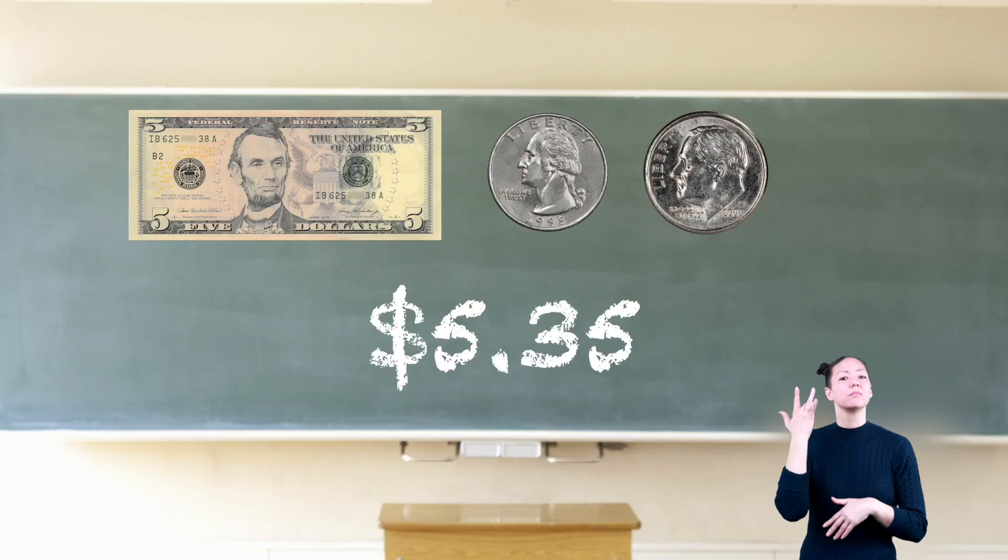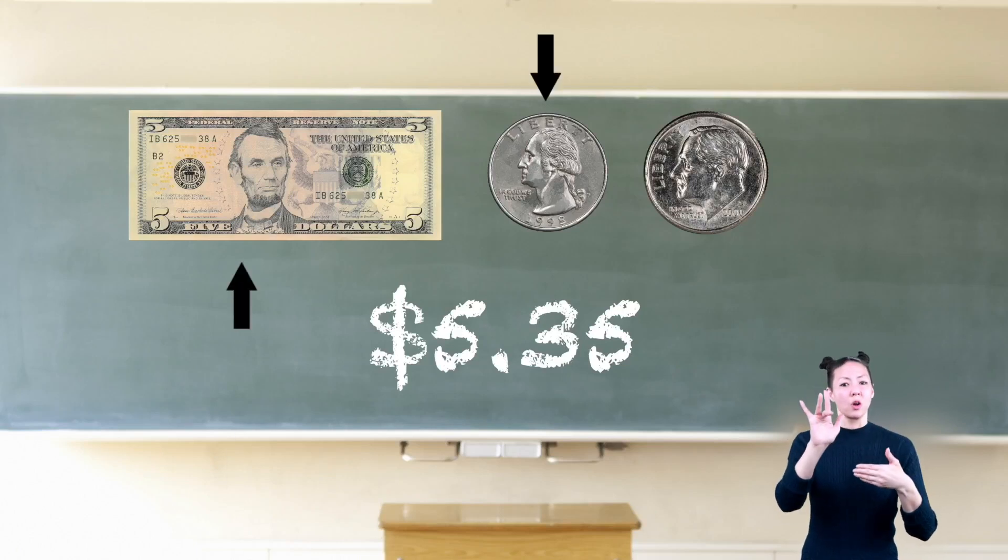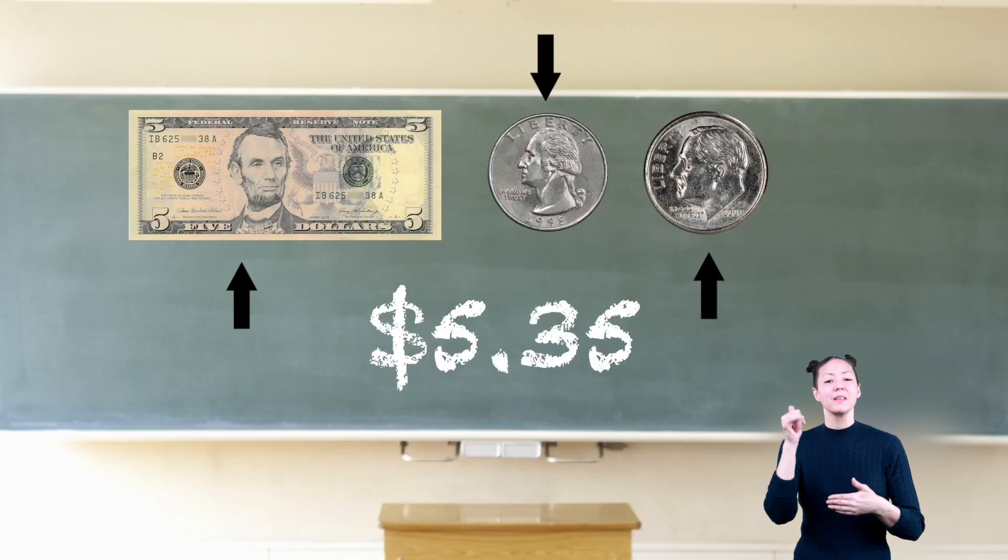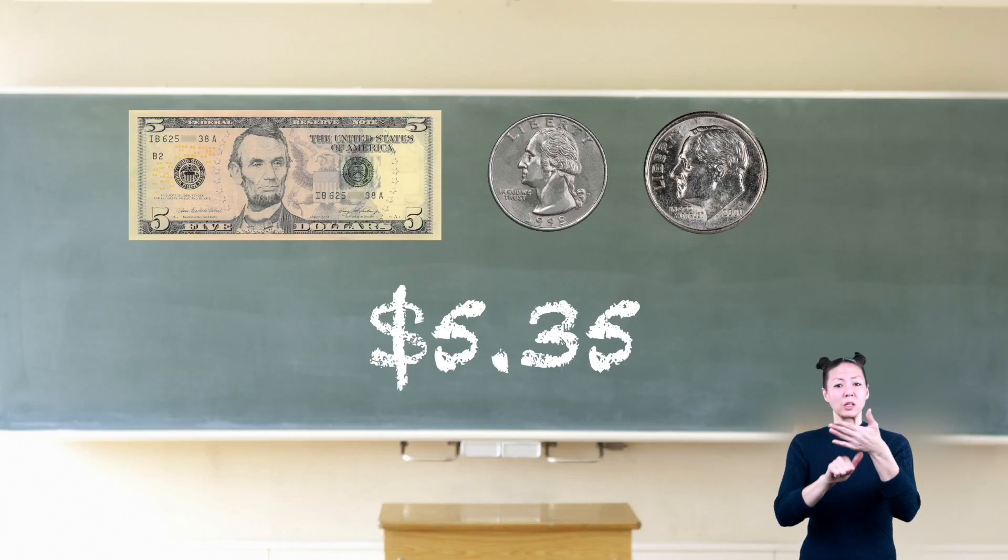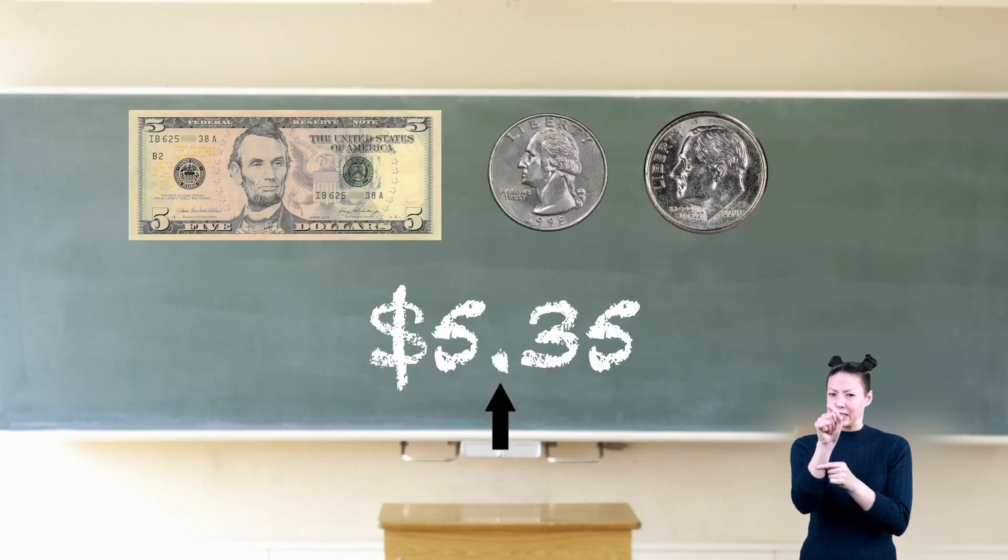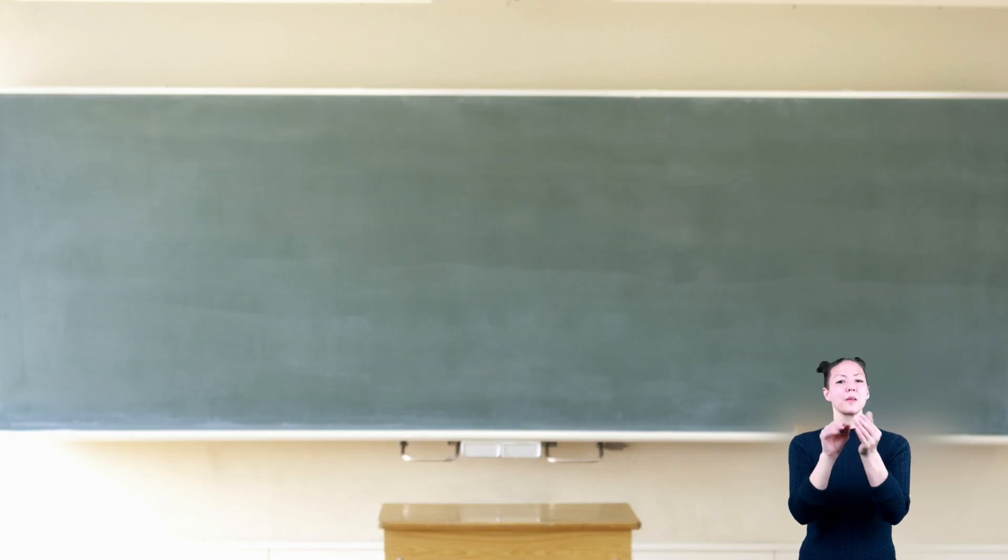For example, the following amount would be written as five dollars and thirty-five cents, or 5.35, because there is one five dollar bill, one quarter, and one dime. As with any decimal addition or subtraction problem, the most important thing to remember is that the decimal points must be lined up.